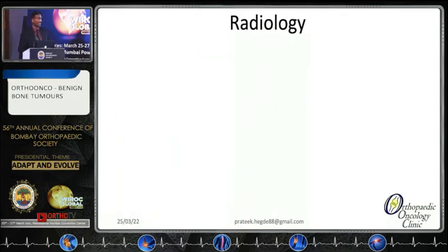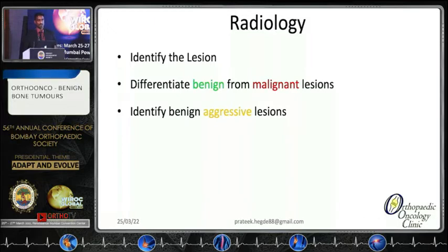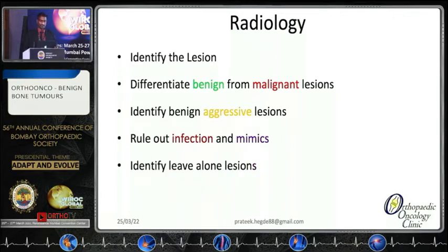How do you identify these? You need the radiological features. Most important is to identify the problematic area, to differentiate benign from malignant lesions, to identify the benign aggressive ones from the benign latent ones, to rule out infection or mimics. And very importantly, to identify the leave-alone lesions which just require observation, and we require radiology for their follow-ups.